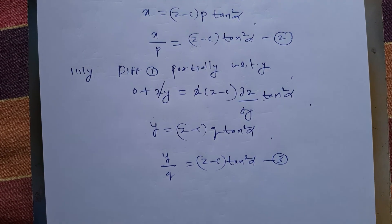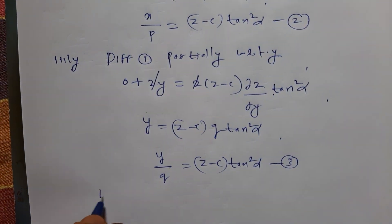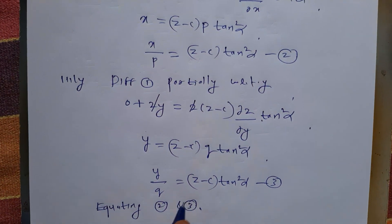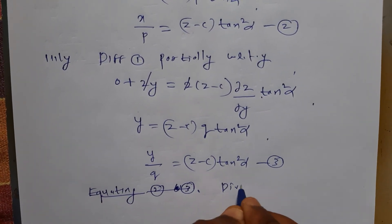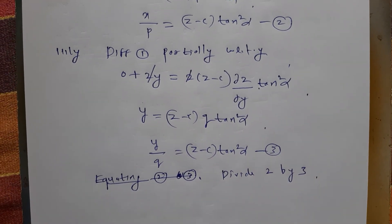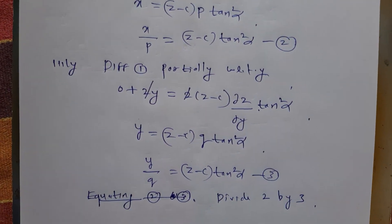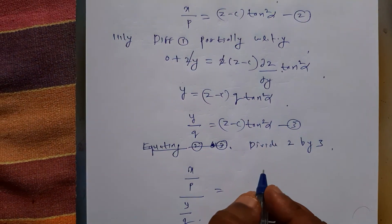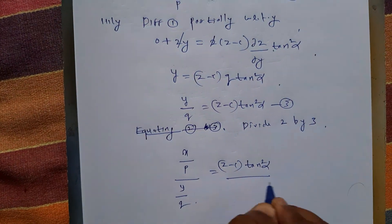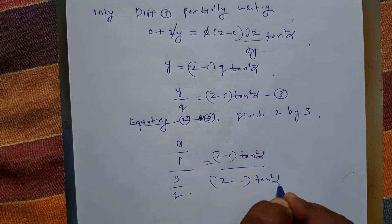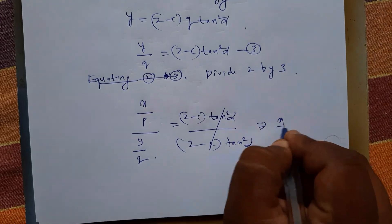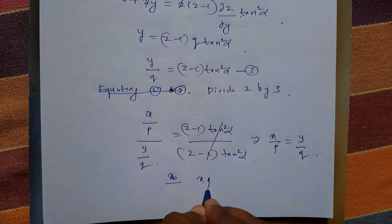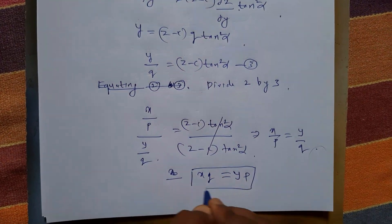To eliminate the arbitrary constants, I divide equation 2 by equation 3. LHS: (x/p) ÷ (y/q) = xq/(yp). RHS: [(z-c)·tan²α] ÷ [(z-c)·tan²α] = 1. So xq/(yp) = 1, giving xq = yp. This is the required answer.